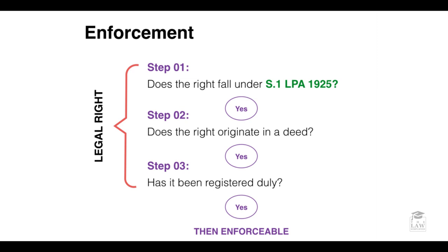Secondly, does the right originate in a deed — has it been conveyed or mentioned in some sort of deed? And thirdly, has it been duly registered? If all three of these components are satisfied — it falls within section one of the LPA 1925, it originates in a deed, and it has been duly registered — then this legal right becomes enforceable.